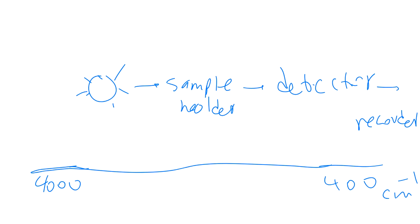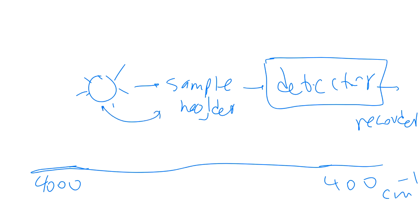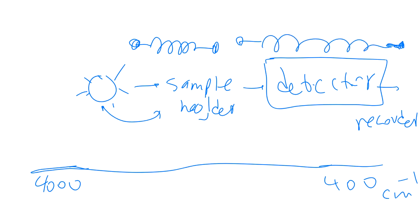When light shines through the sample, the detector measures how the sample responds. In IR, the energy is just enough to vibrate or stretch the bond — not enough to break it. When a bond stretches, the bond length changes from d1 to d2, and this changes the dipole moment for that bond.